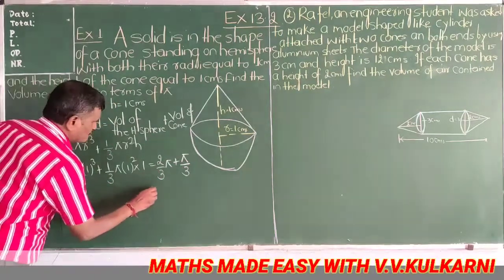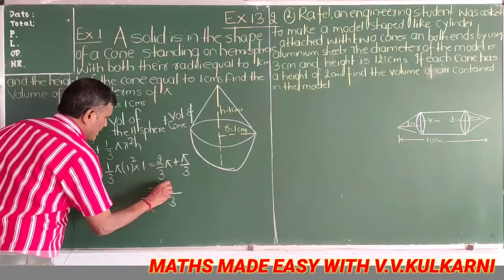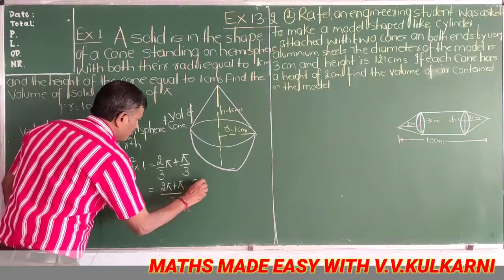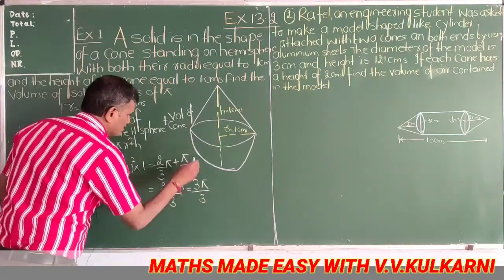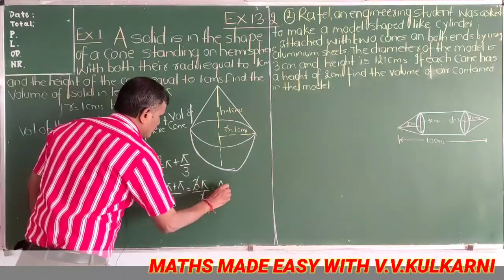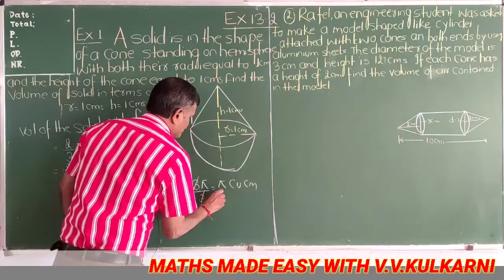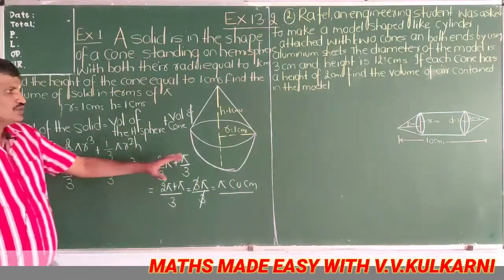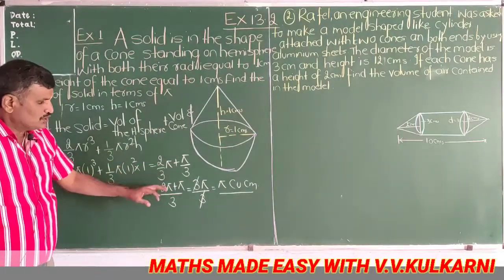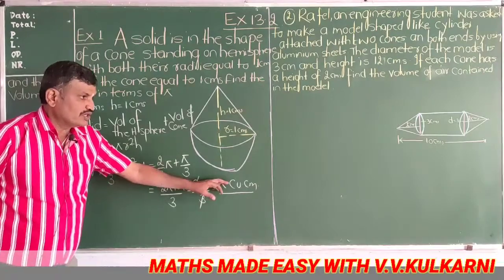To isko solve karoge. LCM hoga 3. So 2π plus 1π is 3π divided by 3. 3 cancels with 3. So aapka jawab hoga π cubic centimeter. The answer is π cubic centimeter — 2/3 π plus 1/3 π gives 3π/3, which equals π.